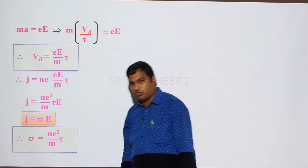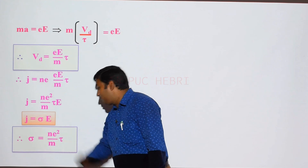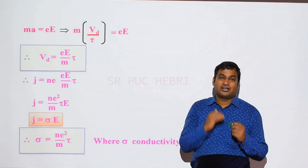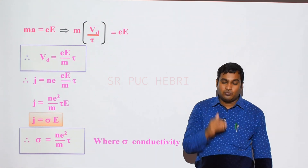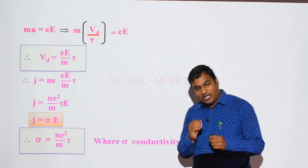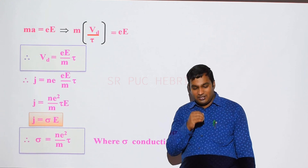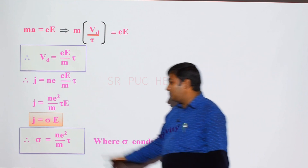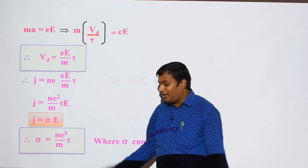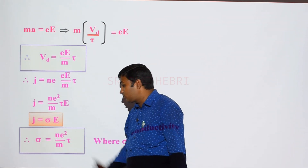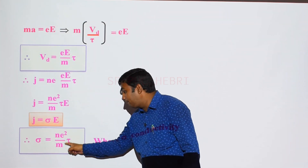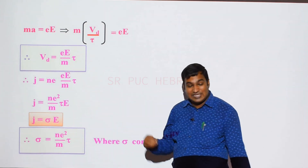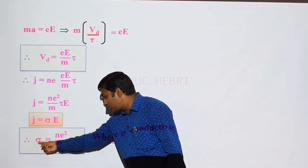This is an important 5-mark exam question: the relationship between current density and electric field J equals sigma E, and the expression for conductivity sigma equals Ne² divided by m tau. Conductivity is a property of a conductor that allows flow of charge. Conductivity depends mainly on relaxation time: if relaxation time is more, conductivity is more; if relaxation time is less, conductivity is also less.